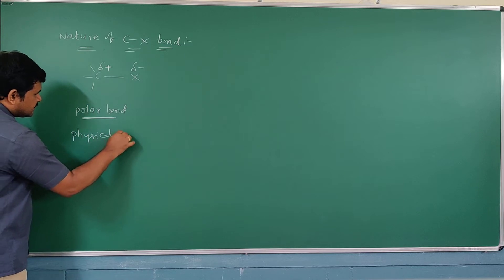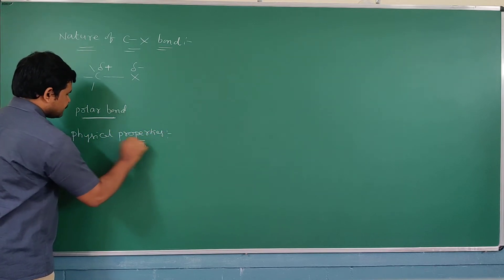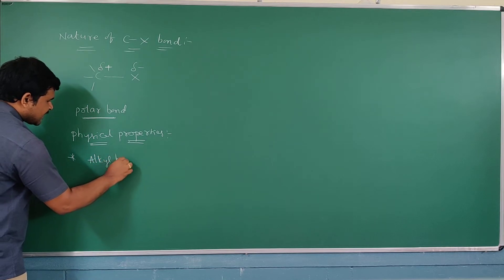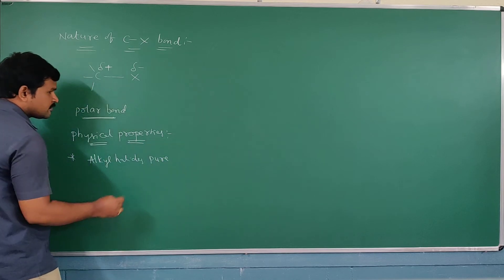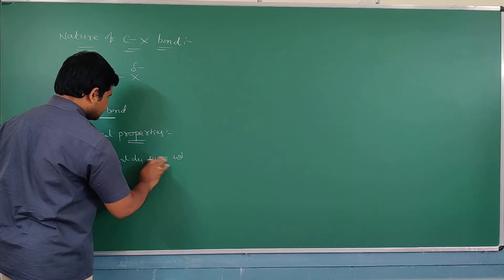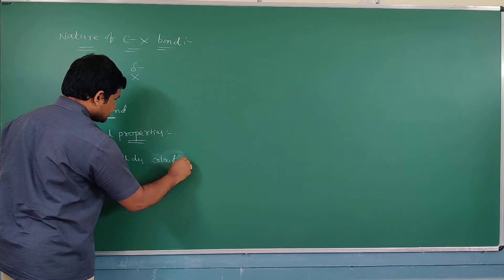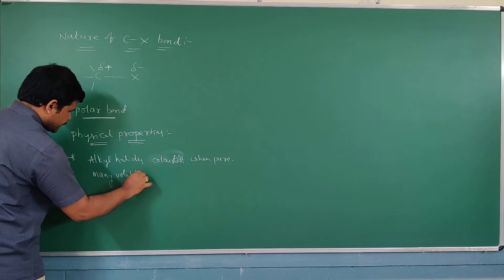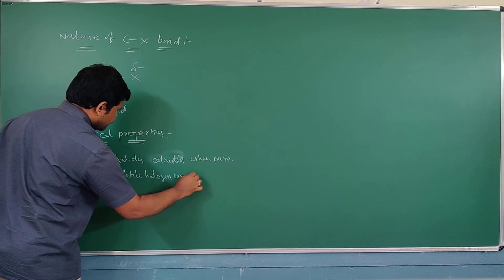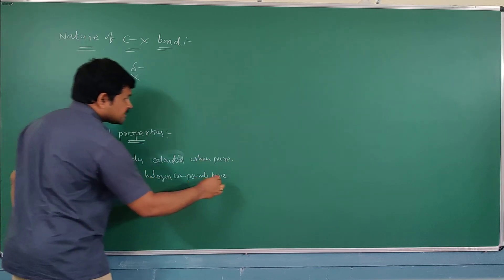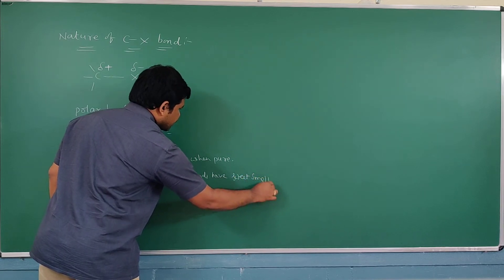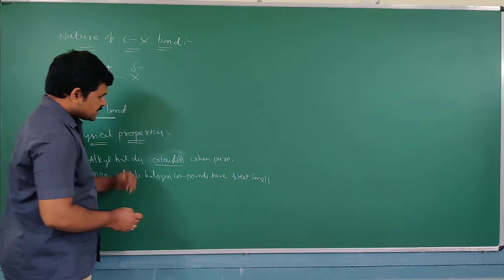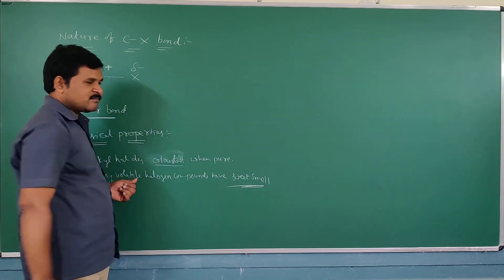Physical properties of alkyl halides. First physical property: alkyl halides are colorless when pure. But many volatile halogen compounds have a sweet smell. Not all volatile halogen compounds have this smell.